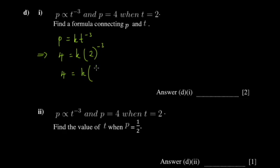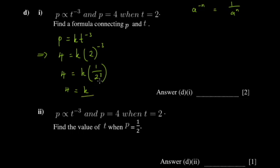We get 4 = k times t to the power negative 3, which equals k over t cubed by the law of indices: a to the power negative n equals 1 over a to the n. So we get 4 = k over 2 cubed, which equals k over 8. Multiplying both sides by 8, k equals 4 times 8, which is 32.